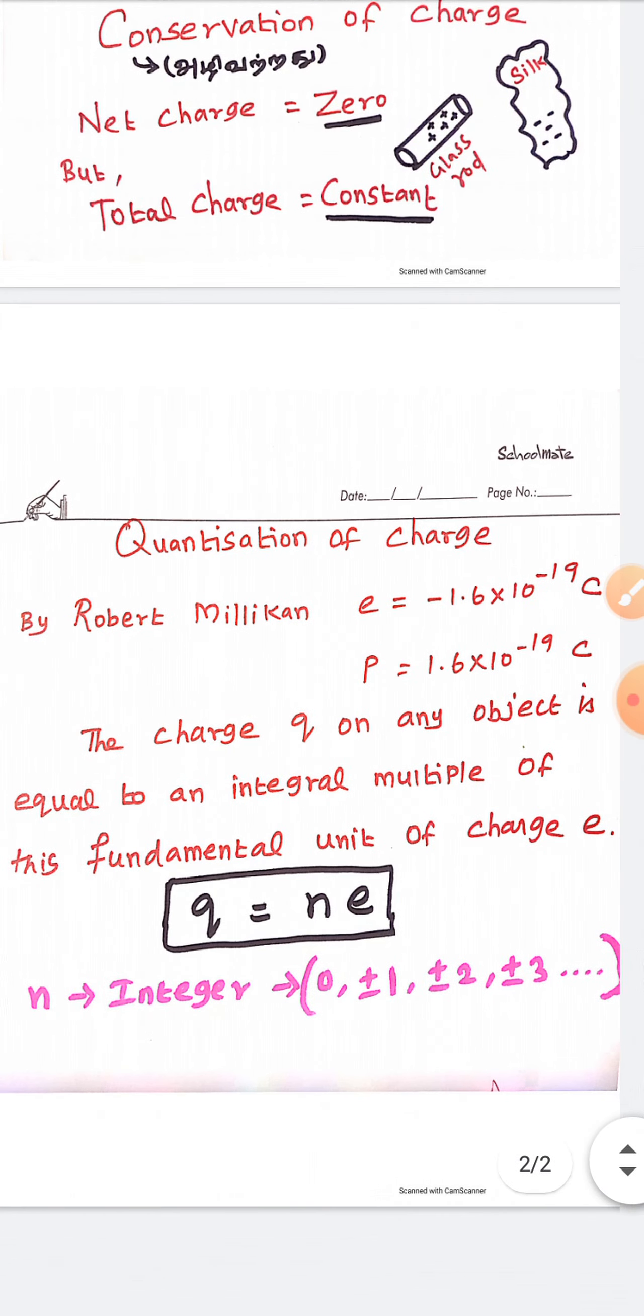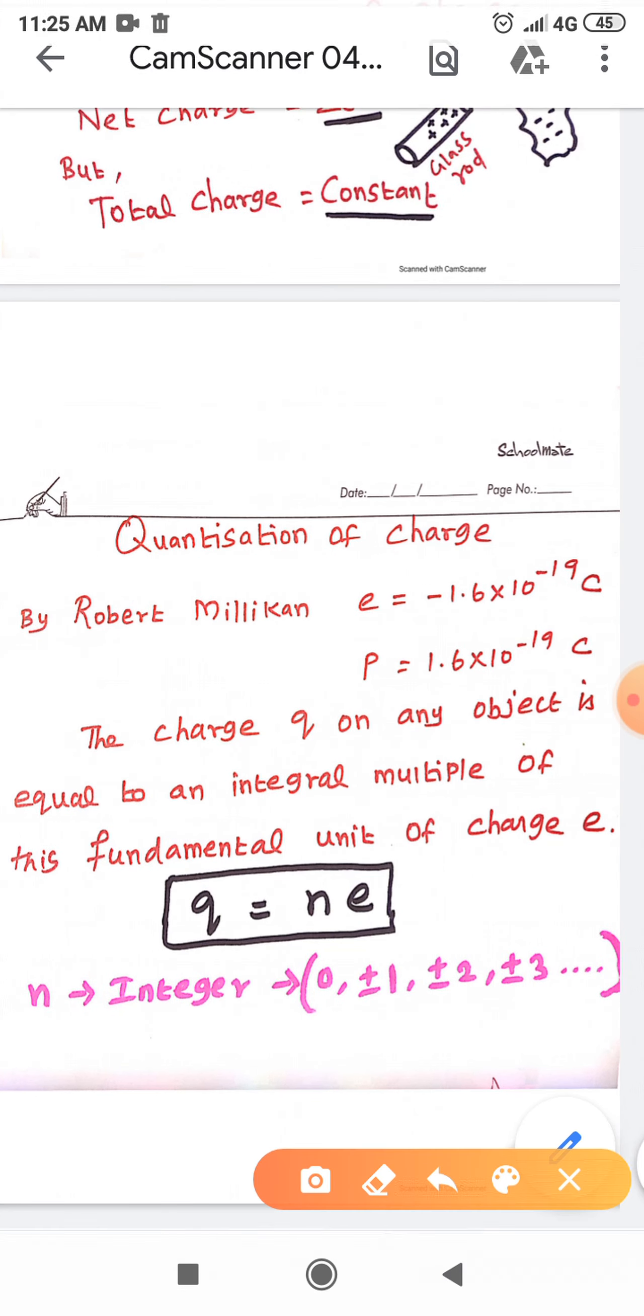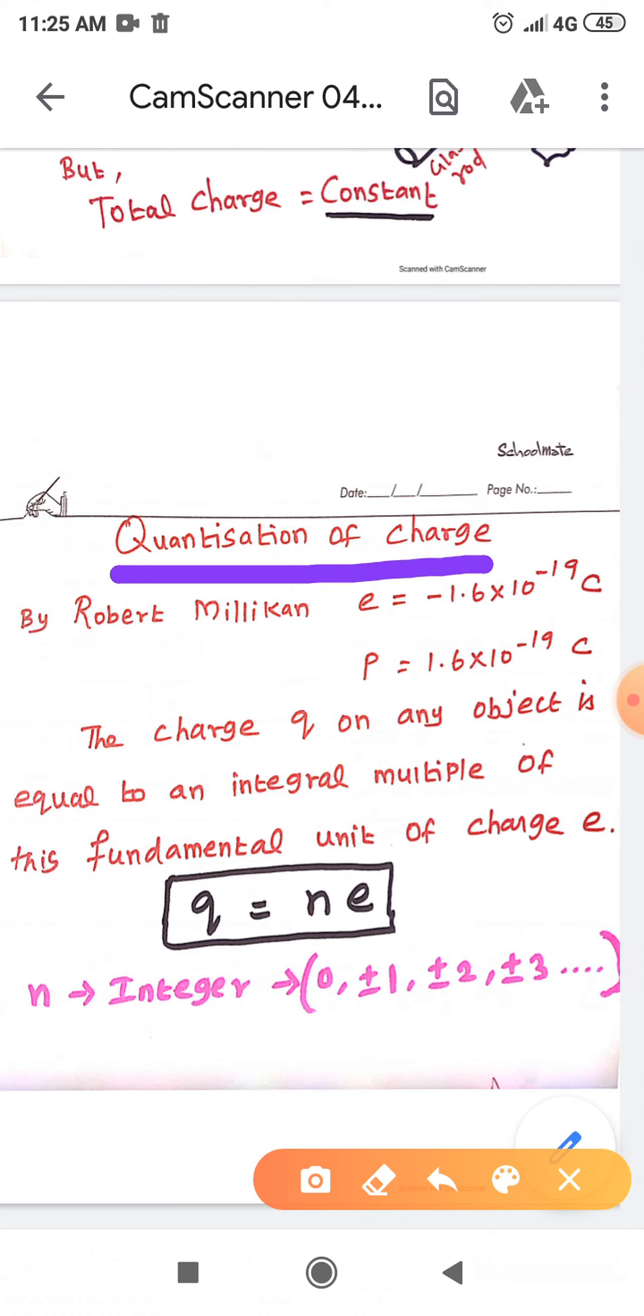Now, the third important property is quantization of charge. Robert Millikan found that the charge value of electron, E is equal to 1.6 into 10 power minus 19 coulomb. Experimentally he found this value, and you will study this experiment in second volume atomic physics lesson later. And the value of proton is 1.6 into 10 power minus 19 coulomb.